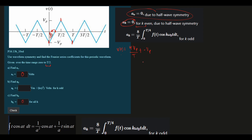So this is what our F(t) is going to look like. Now we can start writing it into the A_k expression. Our A_k is equal to 8 over T, times the integral from 0 to T/4 of F(t), which is 4V_p times little t divided by big T minus V_p, multiplied by cosine of K times omega naught. We know omega naught can be rewritten as 2π divided by T, times little t, then dt. Now I want to factor out V_p and distribute the cosine into everything.